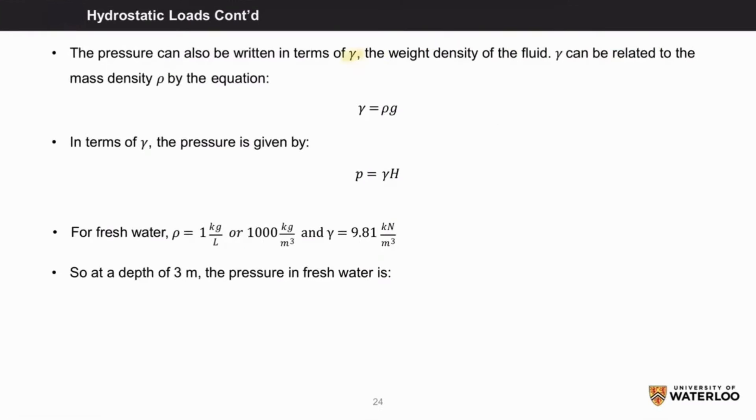Pressure can also be written in terms of gamma, which is the weight density of the fluid, and then gamma can be related back to the mass density, rho, by the equation gamma equals rho times g. In terms of gamma, the pressure is given by p equals gamma times h.